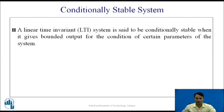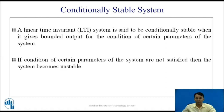A linear time-invariant system is said to be Conditionally Stable when it gives bounded output for the condition of certain parameters of the system. If the condition of certain parameters of the system are not satisfied, then the system becomes unstable. For example, a car is a system that depends upon certain parameters such as the braking system or acceleration system. So a car may be a conditionally stable system because it depends upon the condition of the parameters.